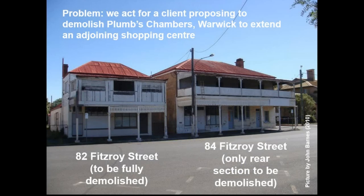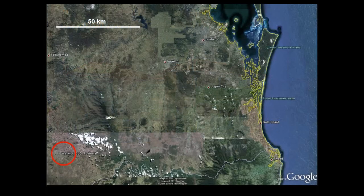The problem is that we act for a client proposing to demolish Plum's Chambers in Warwick to extend an adjoining shopping centre. There are two buildings that comprise Plum's Chambers. It's a historic building — 82 Fitzroy Street, which our client proposes to fully demolish, and 84 Fitzroy Street, where our client proposes only to demolish the rear section. Warwick is located about 150 kilometres west of Brisbane.